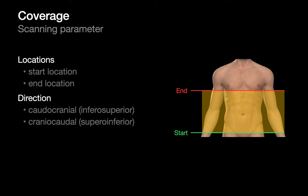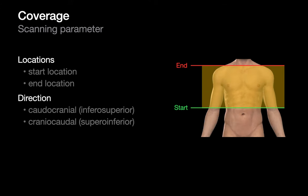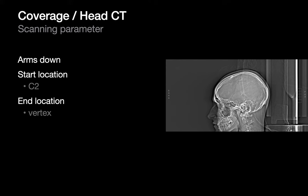Coverage refers to where and how much of the body in the cranial-caudal direction we're scanning, specified by the start and end locations. For head CTs, the patient's arms are down, and the scan begins at the C2 vertebra and ends at the vertex of the skull, scanning from inferior to superior.